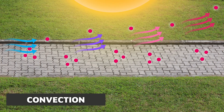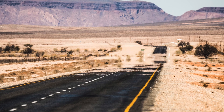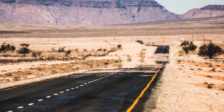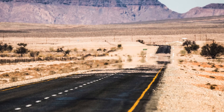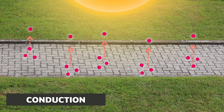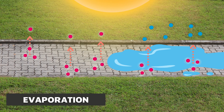Convection occurs when air warmed by the surface rises upward, moving heat away from the surface. Convection from hot pavement is the reason that the air above a heated road on a summer day appears to shimmer. Conduction transfers heat to cooler air that directly touches the hot surface. Conduction can also transfer heat to water resting on the surface, causing evaporation — which leads us to the plant friends.